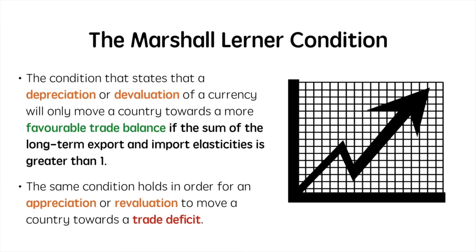The Marshall-Lerner condition addresses the importance of long-term elasticities when considering the impact a change in the value of a currency will have on the value of net exports. The condition states that a depreciation or devaluation of a currency will only move a country towards a favourable trade balance if the sum of the long-term export and import elasticities is greater than 1. The same condition holds in order for an appreciation or revaluation to move a country towards a trade deficit in the long run.